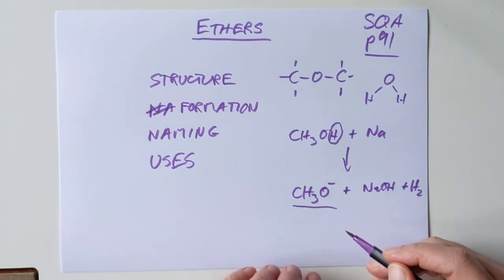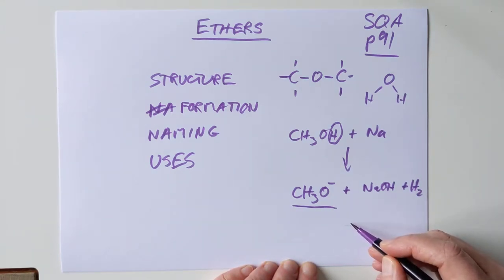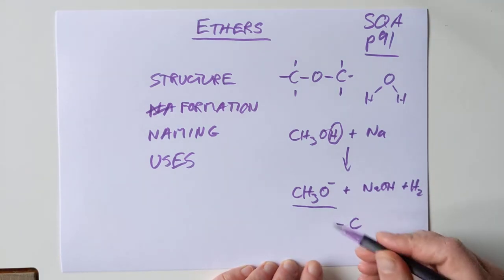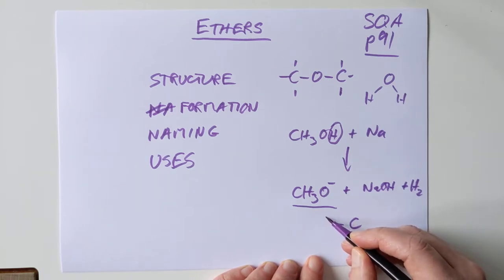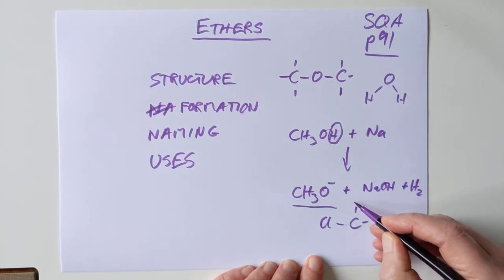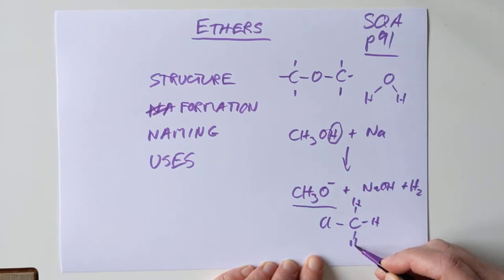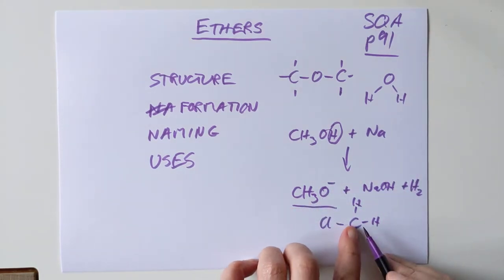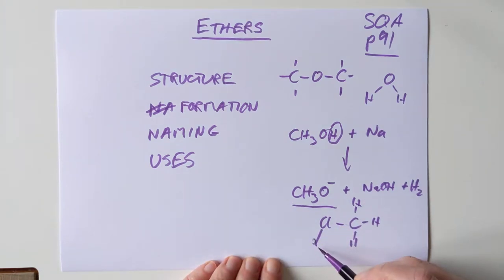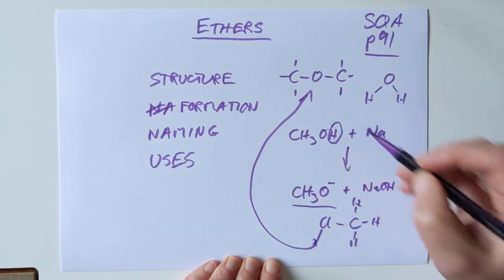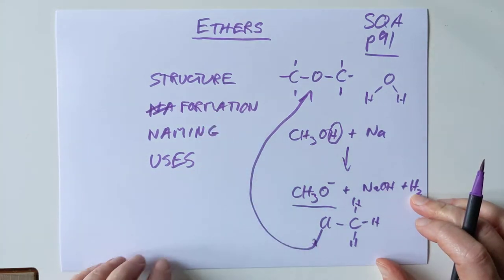So this is a nucleophile, which you can then react with a bromo or a haloalkane. So if we had, say, chloromethane, this will come rushing in, knock your chlorine off, and that will stick directly onto the carbon. So that's how we form them.